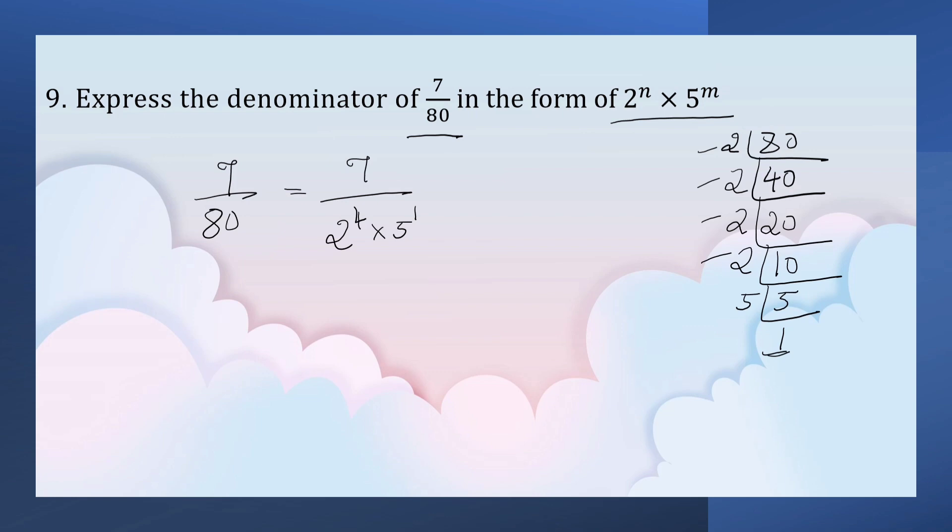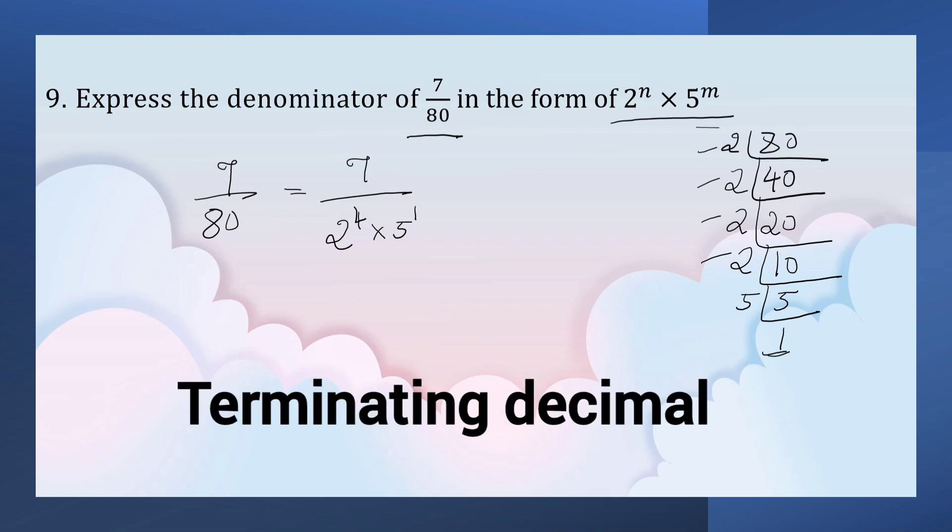Since it can be represented in the form of 2 to the power of n into 5 to the power of m, it is a terminating decimal.